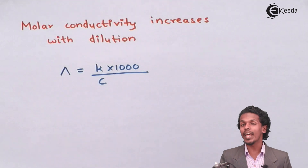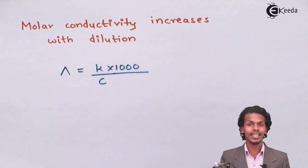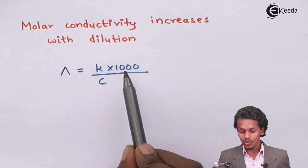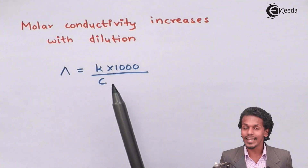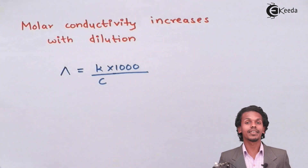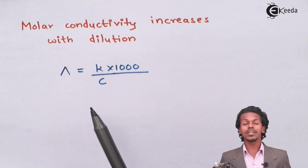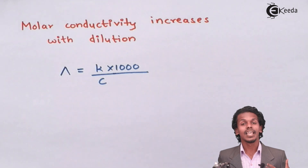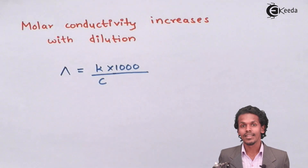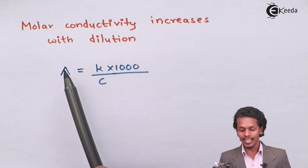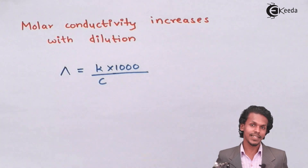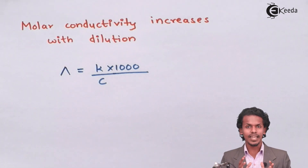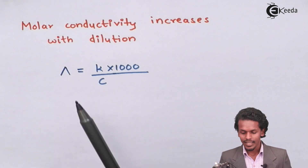When we talk about molar conductivity, its formula is κ × 1000 divided by C. This means that if concentration keeps increasing, then molar conductivity decreases. But if concentration keeps decreasing — that is, if the solution is getting more diluted — then since the value of C decreases, the value of capital lambda, that is the molar conductivity, will keep increasing.